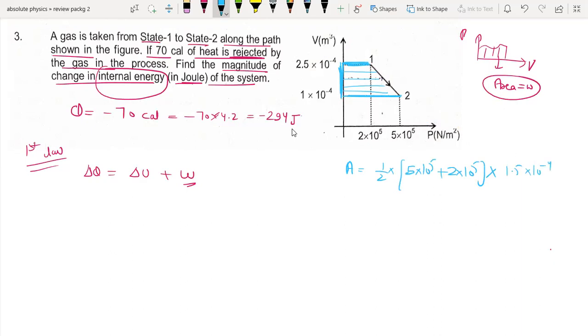This equals 7 times 10 to the power 5 by 2 into 1.5 times 10 to the power minus 4. This equals 7 times 1.5 by 2 times 10, which equals minus 52.5 joules. The area is negative because